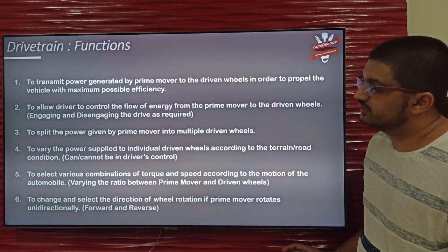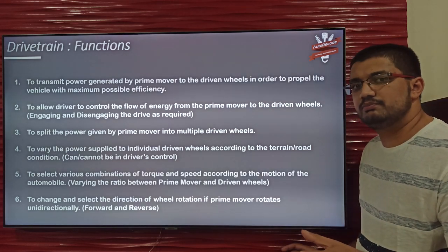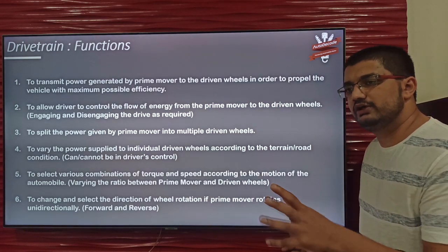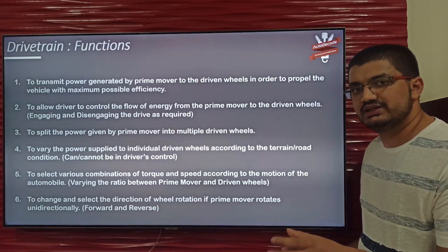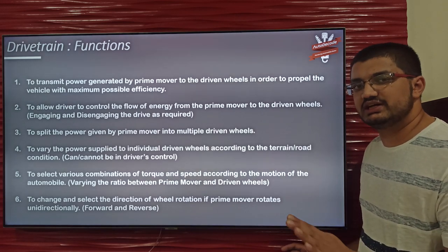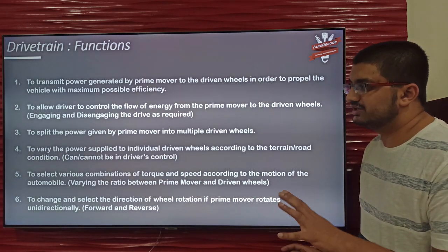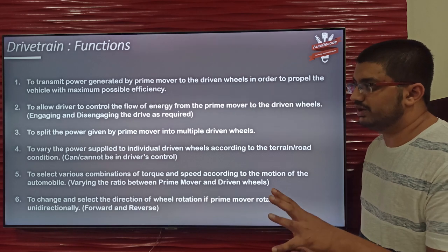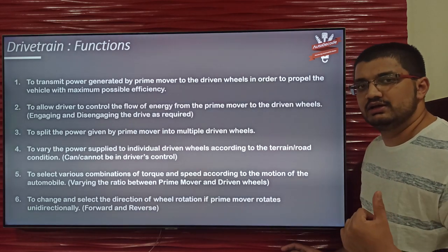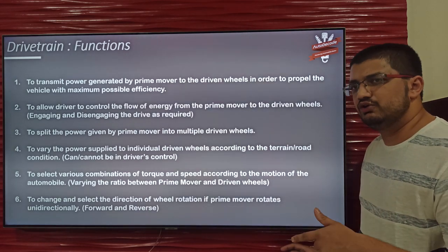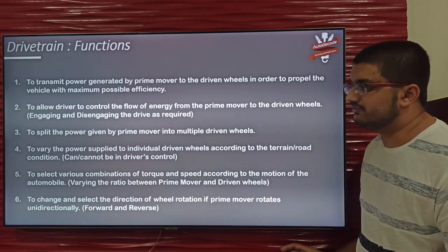The next function is to vary the power given to individual wheels according to terrain condition or traction — in simple terms, the grip under the tire. The drivetrain also does this function; it varies the power supplied to each individual wheel either manually or electronically, depending on the type of drivetrain.